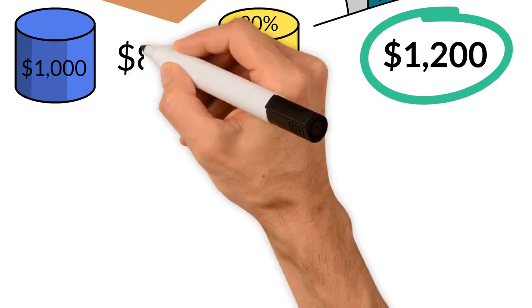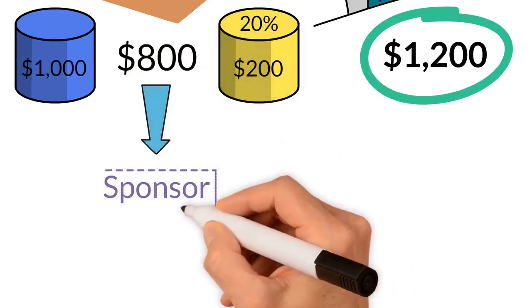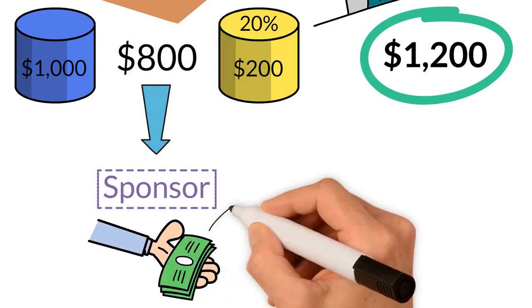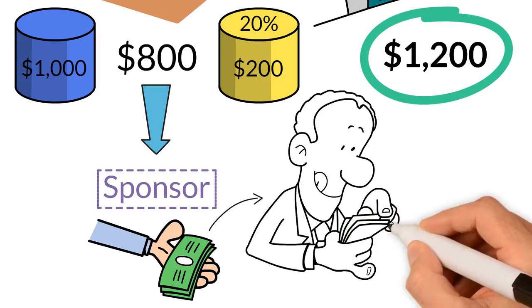The remaining $800 would go up to your sponsor based on their qualification level, and what remains after that goes on upline to the next person based on their qualification level.